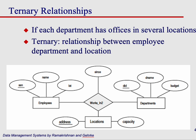Let's say you have the case of employees working in departments, and now you want to keep track of locations too, because each department may have offices in several locations. This is called a ternary relationship, where three entities are all related together — employee, department, and location — because just saying they work in this department doesn't tell you which location if there are several locations.